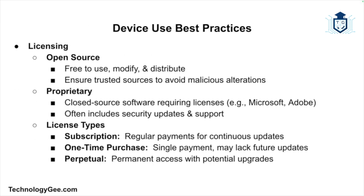Let's now discuss best practices for using devices securely, including managing software licenses and validating software sources. Software licensing is crucial for ensuring you use applications legally and securely. There are several types of licenses. The first is an open license — software that is free to use, modify, and distribute. While convenient, ensure the source is trustworthy and not altered by malicious actors. We also have a proprietary license — closed source software requiring a license, like Microsoft Windows or Adobe products, which often come with support and security updates.